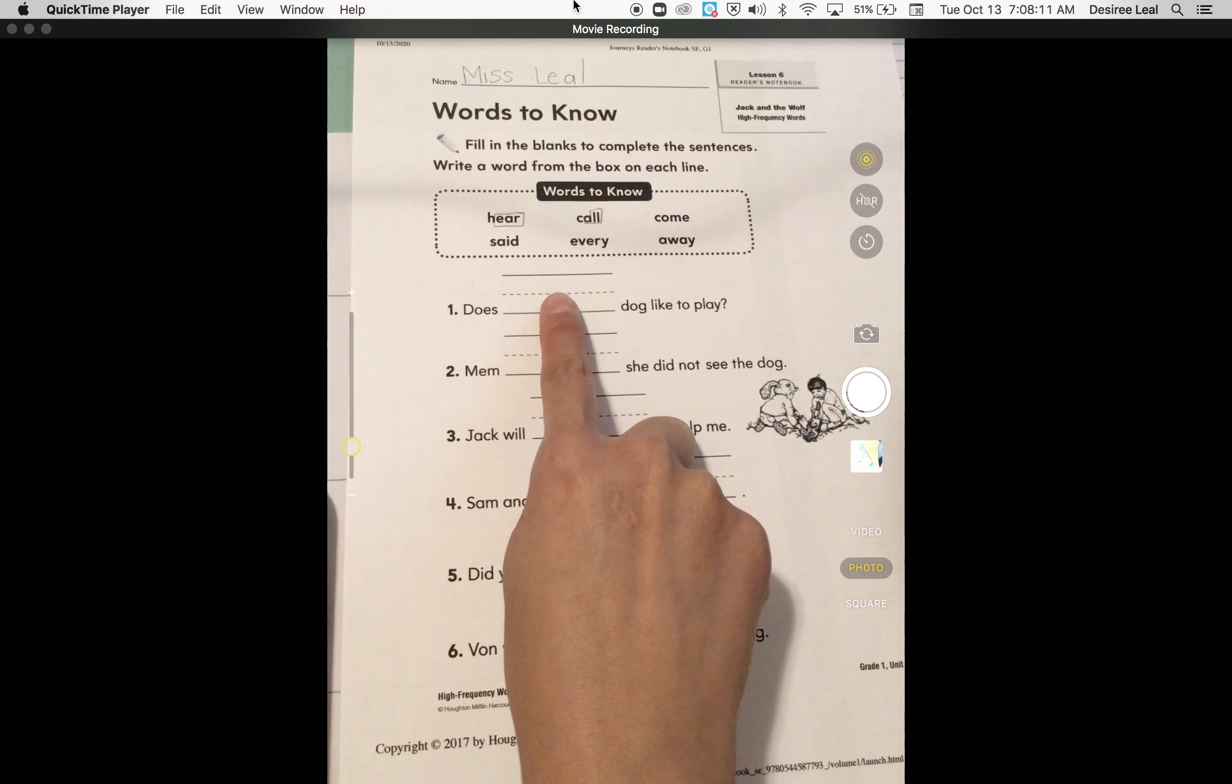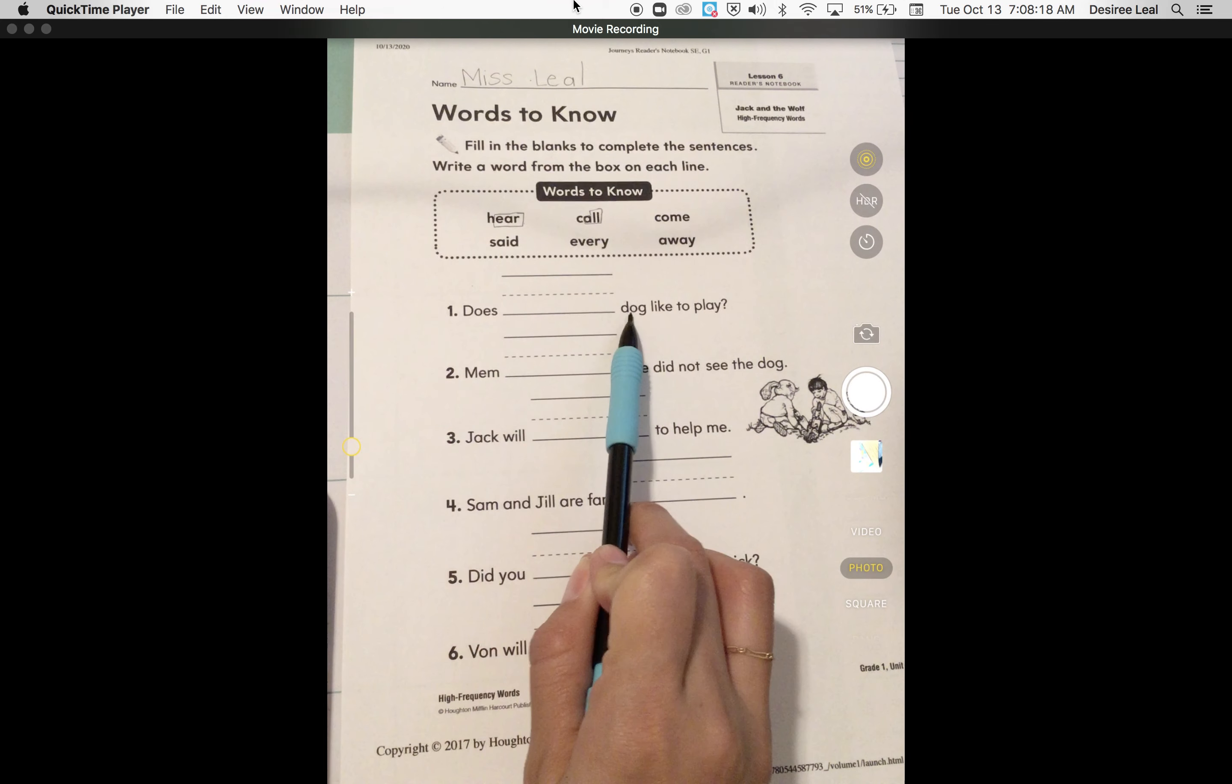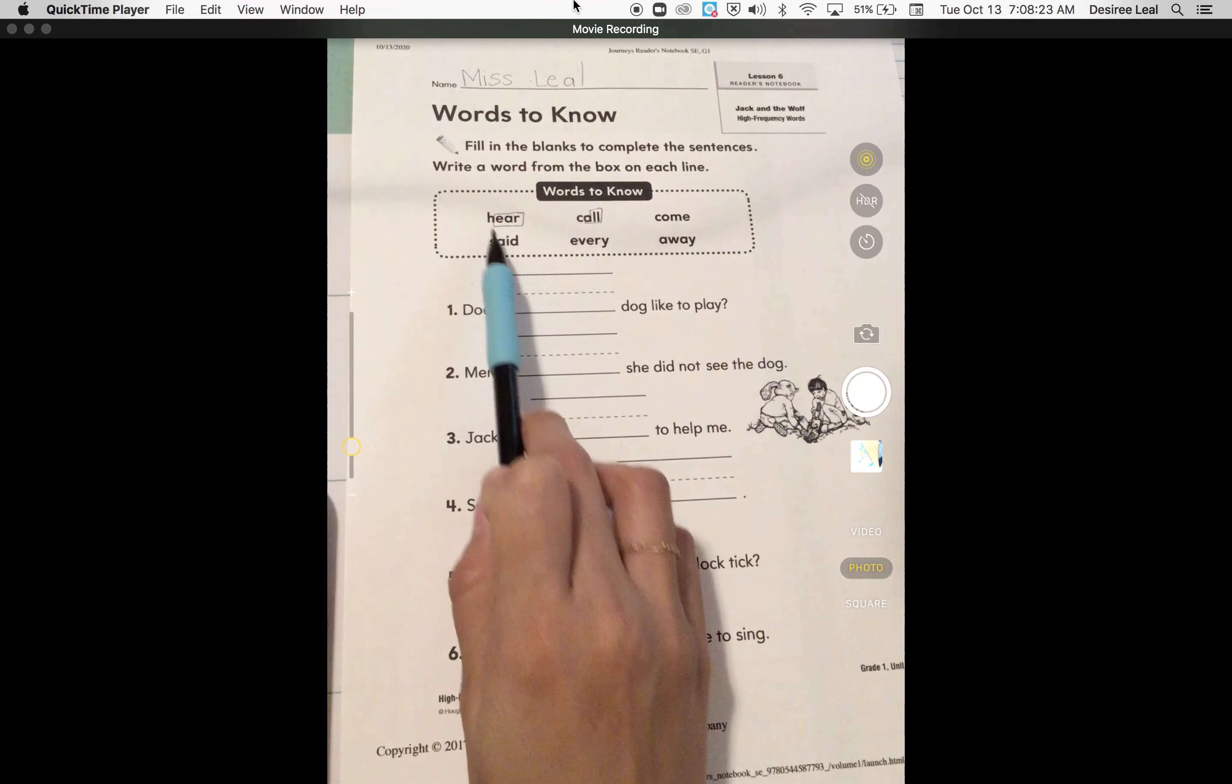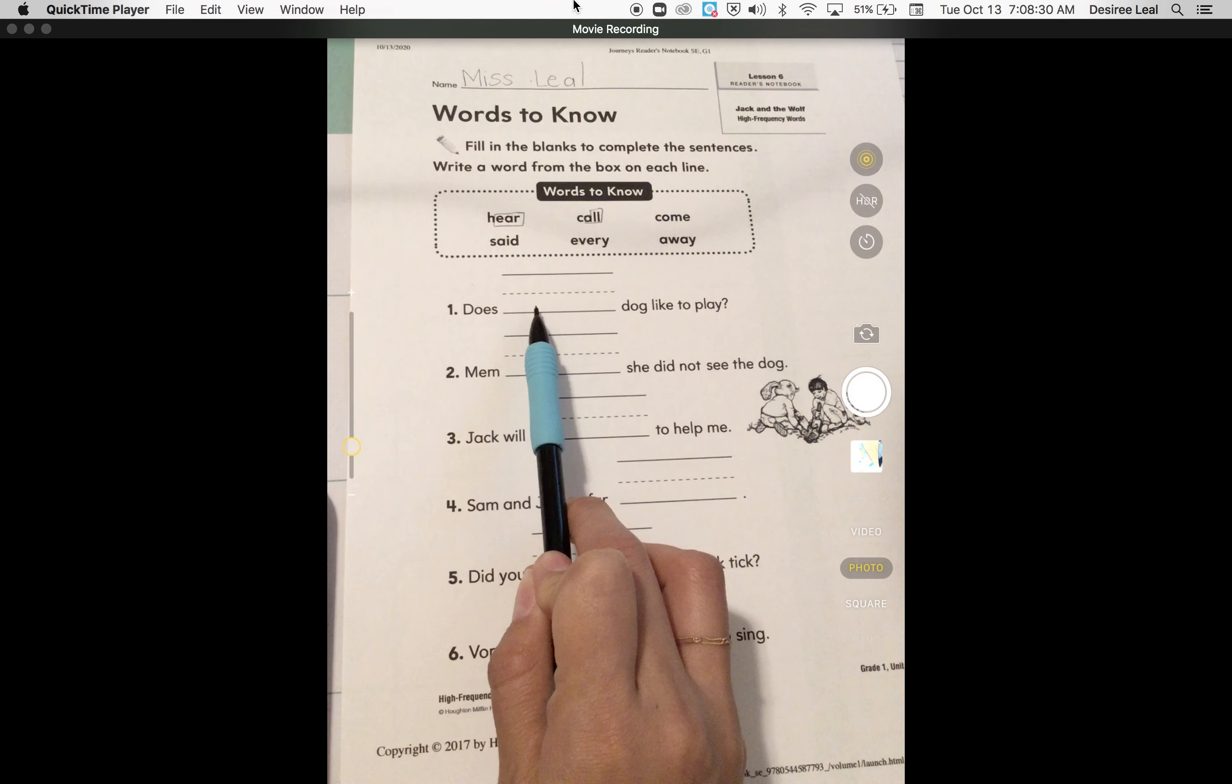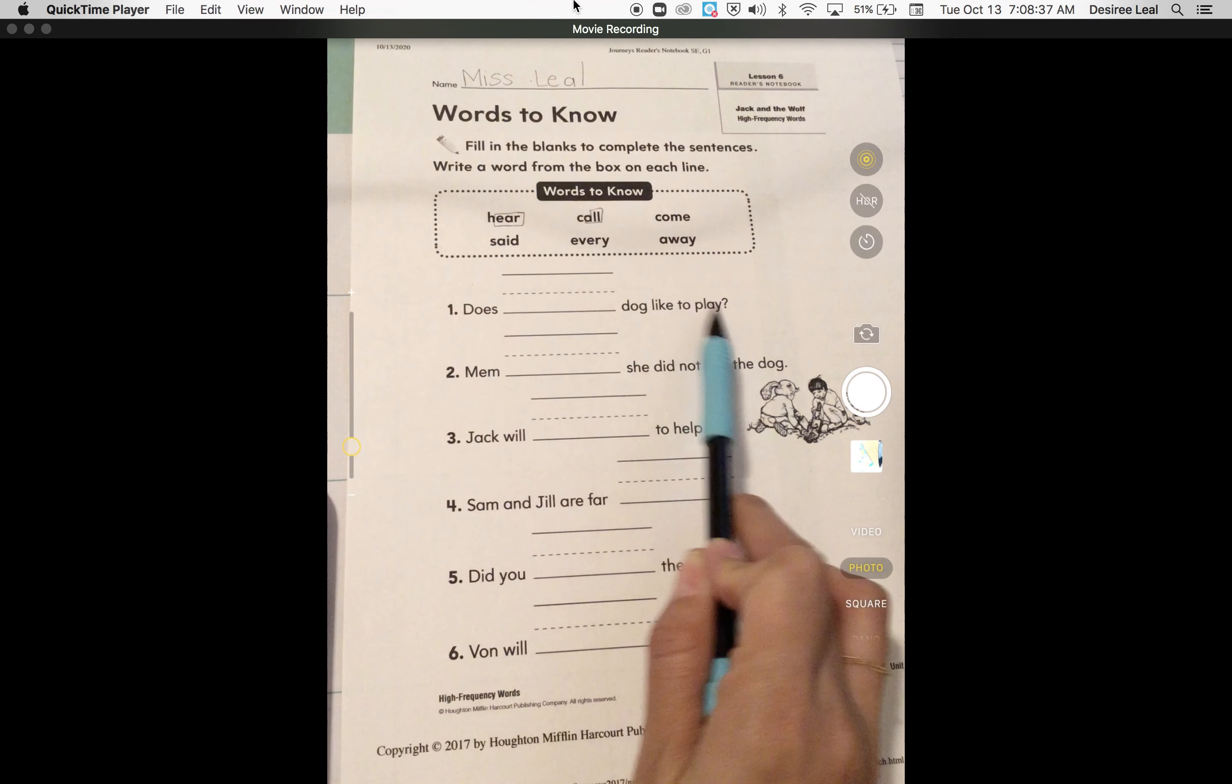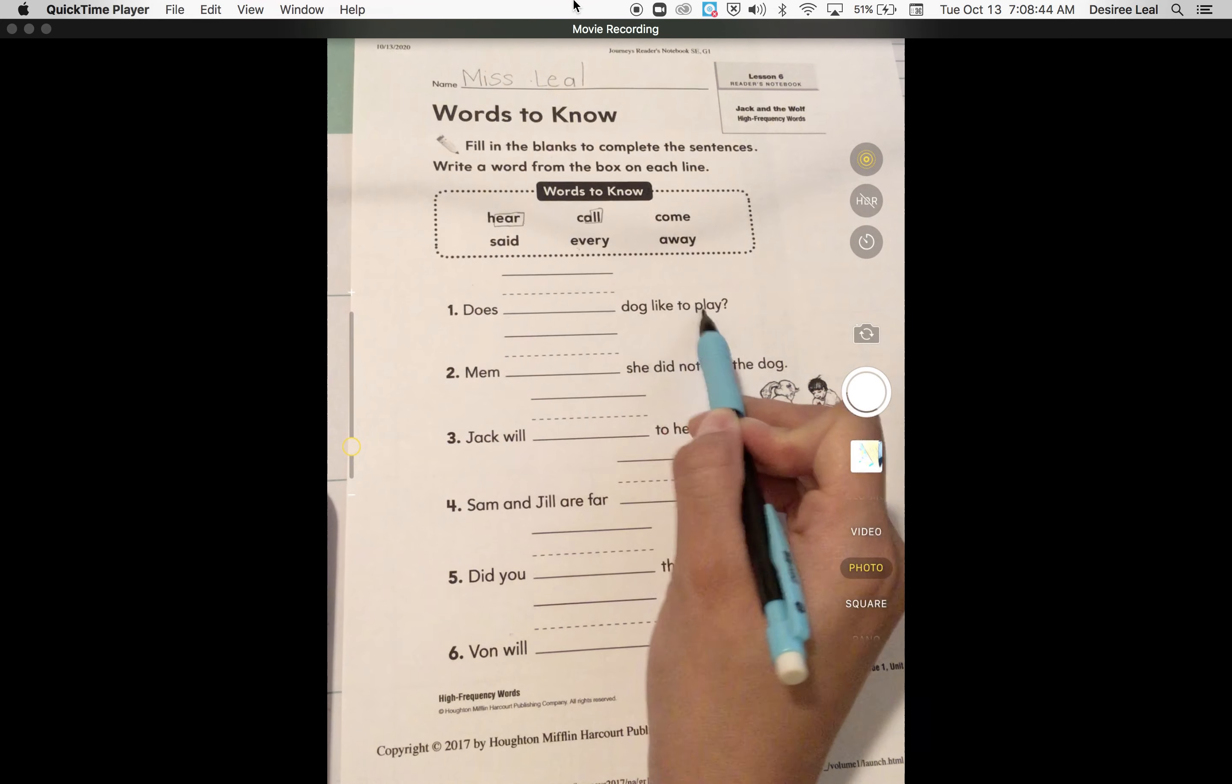Okay boys and girls, so it is going to be our job to pick the correct words that go here. So for example, this one says, does blank dog like to play? So does hear dog like to play? Does said dog like to play? Does call dog like to play? Does every dog like to play? Does come dog like to play? Or does away dog like to play? The one that makes sense is, does every dog like to play?